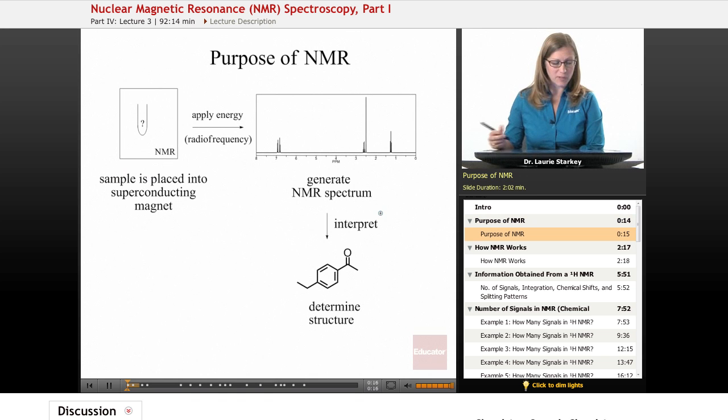The purpose of NMR is we take an unknown sample, place it in an NMR tube, and it's placed inside of a superconducting magnet—a very strong, powerful magnet that needs to be cooled to very low temperatures in order to have its properties.